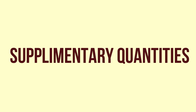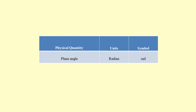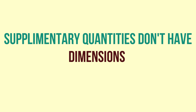Now the two supplementary quantities: plane angle, measured in radian (rad), and solid angle, measured in steradian (sr). The main difference between fundamental and supplementary quantities is that supplementary quantities do not have dimensions. We will see more about dimensions in our next video.